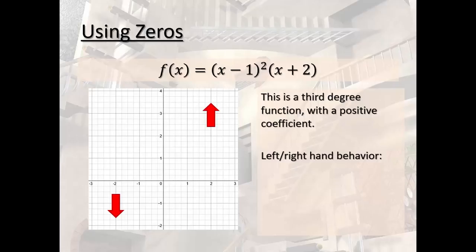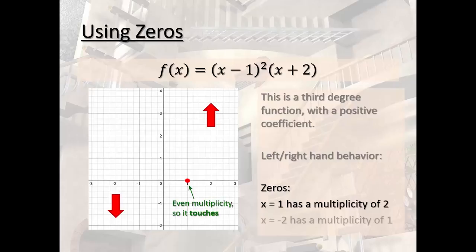All right. So here's what else we know. It's already factored. So we know that we have zeros at 1 and that the zero at 1 has a multiplicity of 2. We know that we have a zero at negative 2. We know that we have a zero at negative 2 and that has a multiplicity of 1.